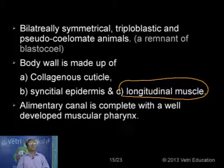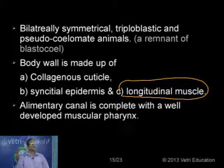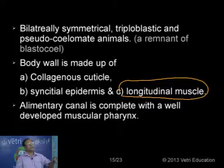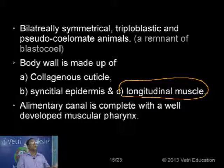The digestive glands for secreting enzymes are absent in parasitic roundworms — this is one of the adaptations. As these animals live as intestinal parasites, they are absorbing food which is already in digested form. They are getting instant food, which is already digested. That is why there is no need to break down the food further, so they have no digestive glands.